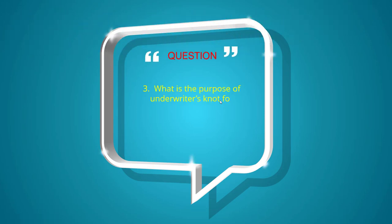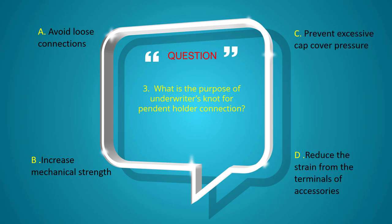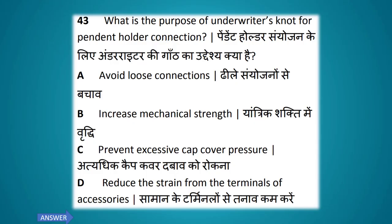What is the purpose of the underwriter knot for pendant holder connection? Options: avoid loose connection, increase mechanical strength, prevent excessive cap cover pressure, reduce the strain from the terminals of accessories. The answer is reduce the strain from terminals of accessories.